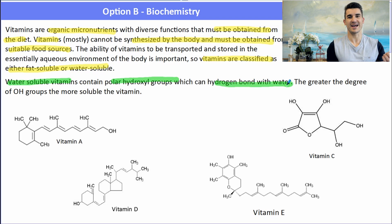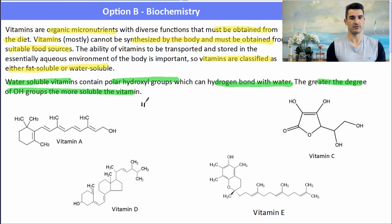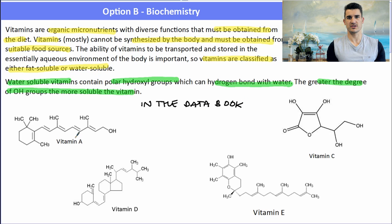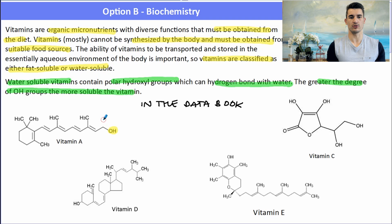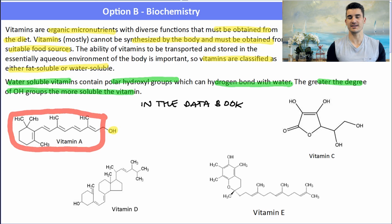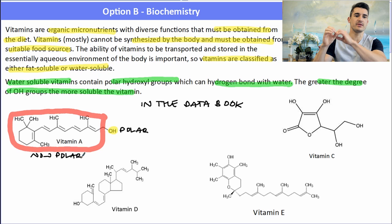Water-soluble vitamins contain polar hydroxy groups which can hydrogen bond with water. The greater the degree of OH groups, the greater the solubility of the vitamin. If you are asked to compare the solubilities of these vitamins, make sure you refer to the data book and look for the polar hydroxy groups. Vitamin A has one polar hydroxy group, so one location where it can form hydrogen bonds. The rest of the molecule is essentially non-polar — it has a large section of an alkene, a ring, and some methyl groups. So we have this tiny polar head and a very large non-polar section, which makes vitamin A insoluble in water — it is fat-soluble and can be found in the fat stores of the body.